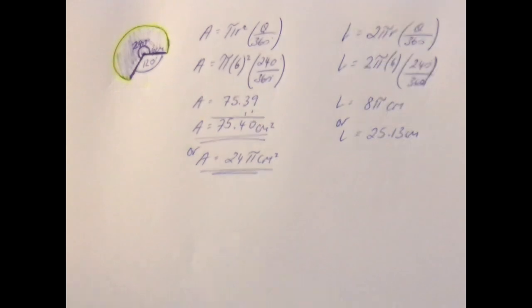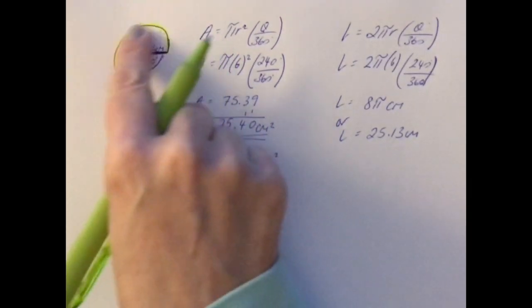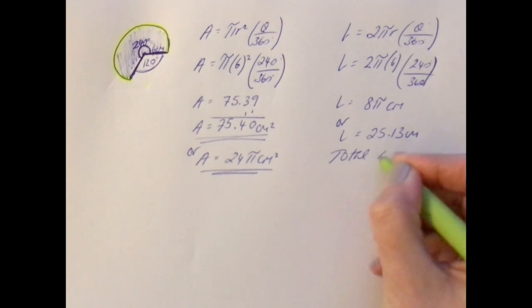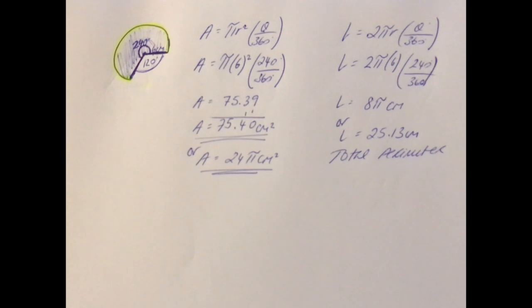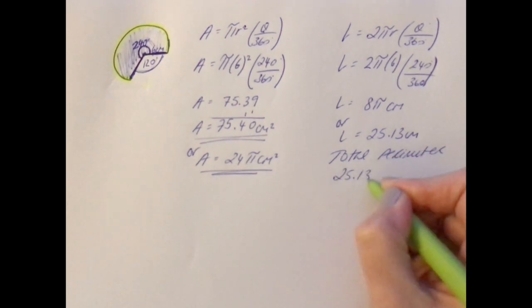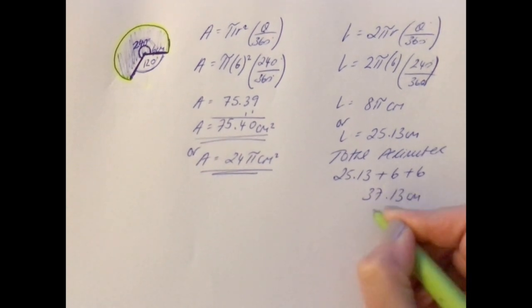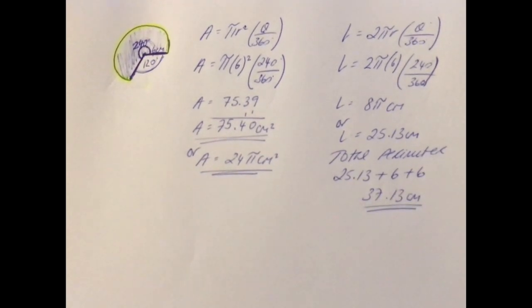That, remember, is just the length of the highlighted bit, the arc. So if I want the total perimeter, remember, you need to add on the other two lengths. So it'll be 25.13 add 6 add 6, and that gives you 37.13 centimeters for the total perimeter.